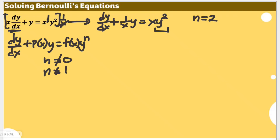Together with this, we can identify p(x) as 1/x, and f(x) as x. In our previous video, if this were a linear equation, we'd use p(x) and then f(x) in solving for the integrating factor and the process itself. But since this is a Bernoulli equation, we cannot use that approach. We are going to use a certain method instead.